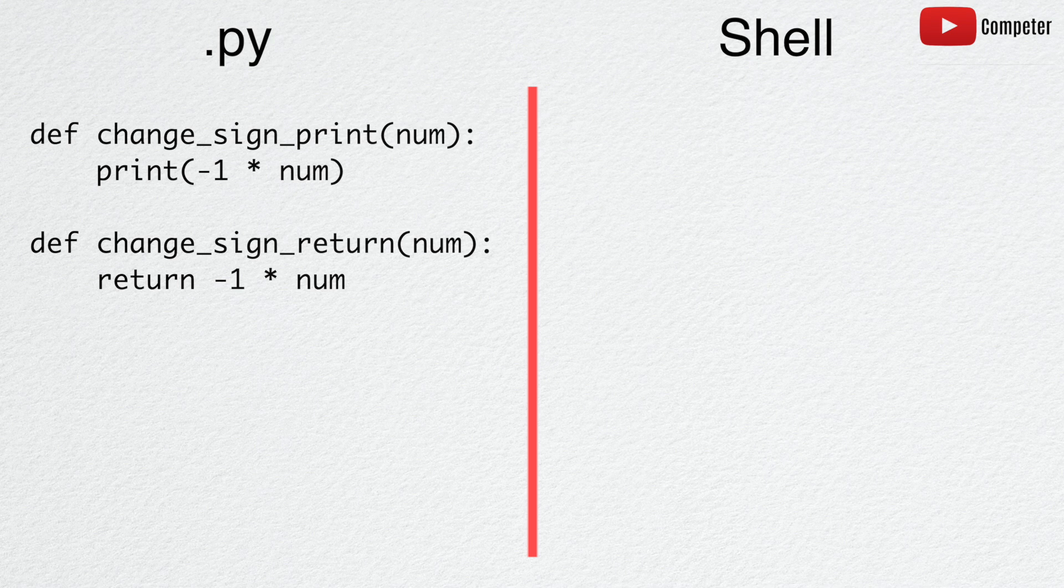Let's see how these two functions are different. In Python interactive shell, if you call the function change_sign_print with num equal to 3, negative 3 gets printed.